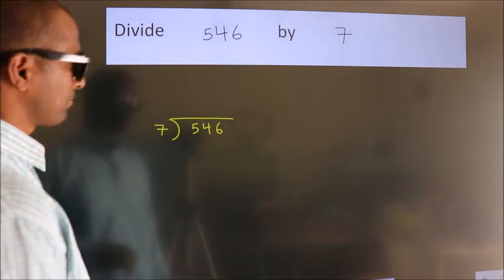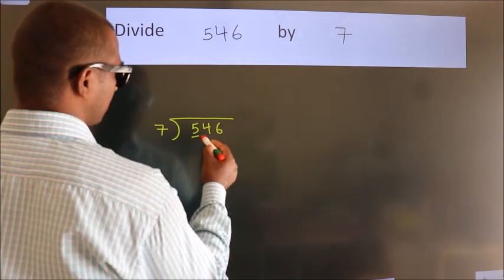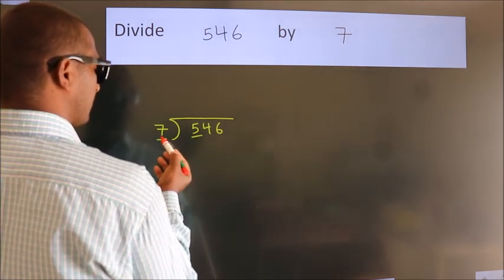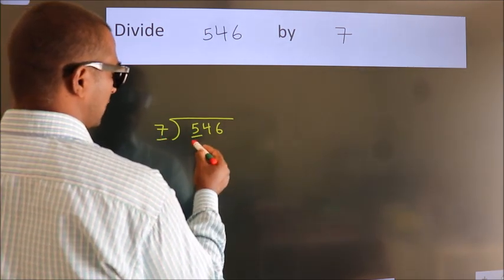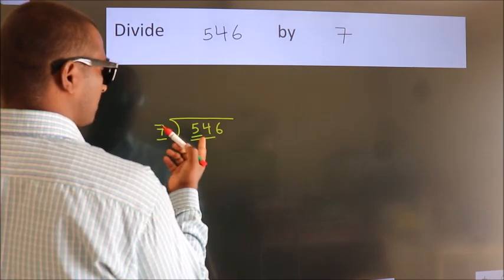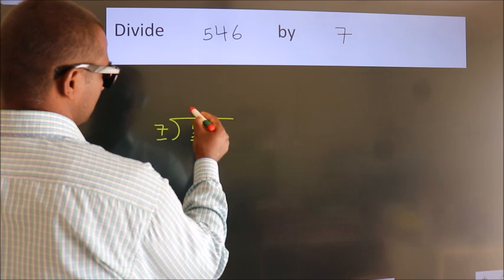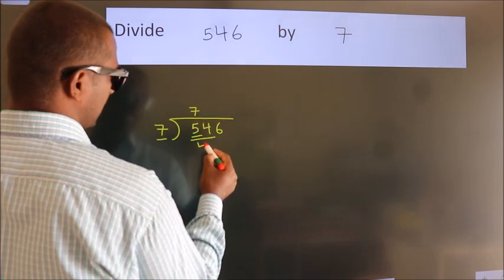Next, here we have 5, here 7. 5 is smaller than 7, so we should take two numbers: 54. A number close to 54 in the 7 times table is 7 sevens, 49.